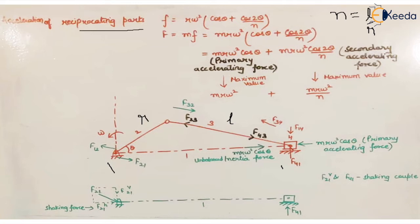We have already derived the acceleration of reciprocating parts, or the acceleration of the piston, during dynamic force analysis. The acceleration is equal to rω²(cosθ + cos2θ/n), where θ is the angle made by the crank with the line of stroke, r is the length of the crank, ω is the angular speed with which the crank is rotating, and n is the ratio l/r, where l is the length of the connecting rod and r is the length of the crank.